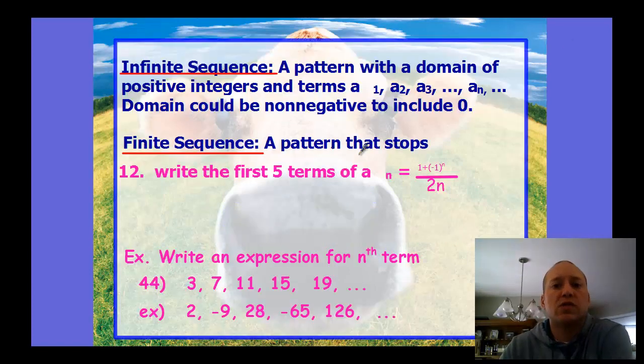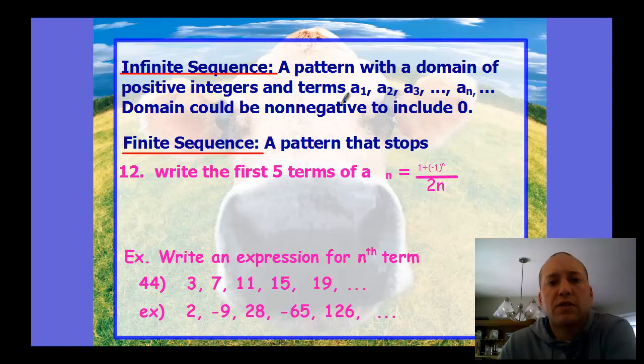An infinite sequence is just a pattern with positive integers and terms a₁, a₂, a₃. These are the term numbers 1, 2, 3 within the pattern, and it continues on to an infinite value. The domain could be non-negative to include 0 if you want to have a 0 term. A finite sequence is just a pattern that stops - you're only looking at so many terms within a pattern.